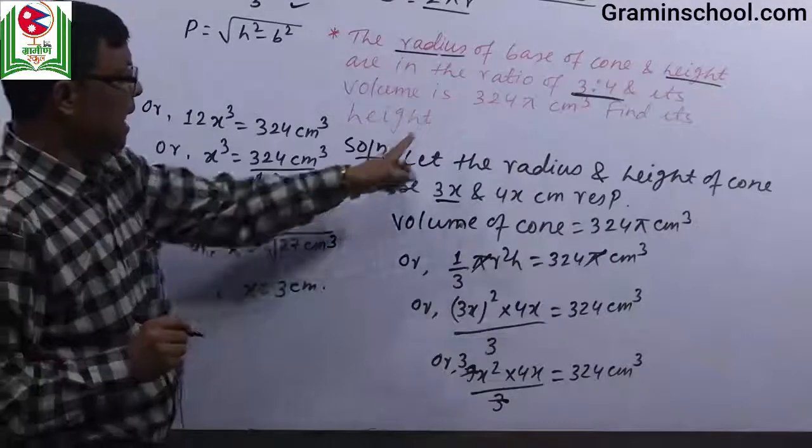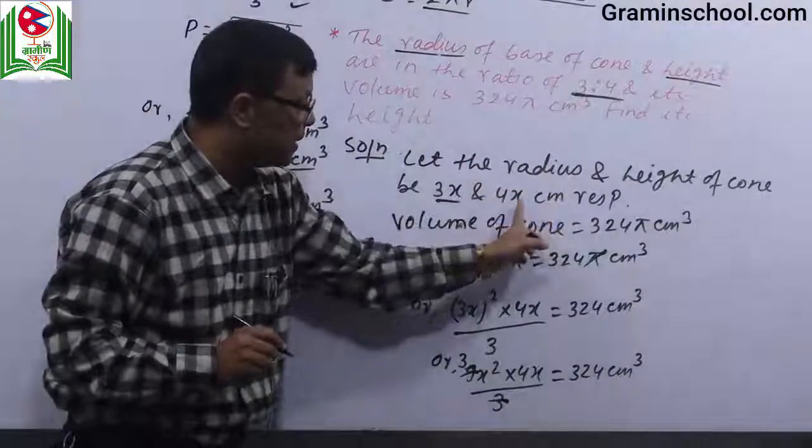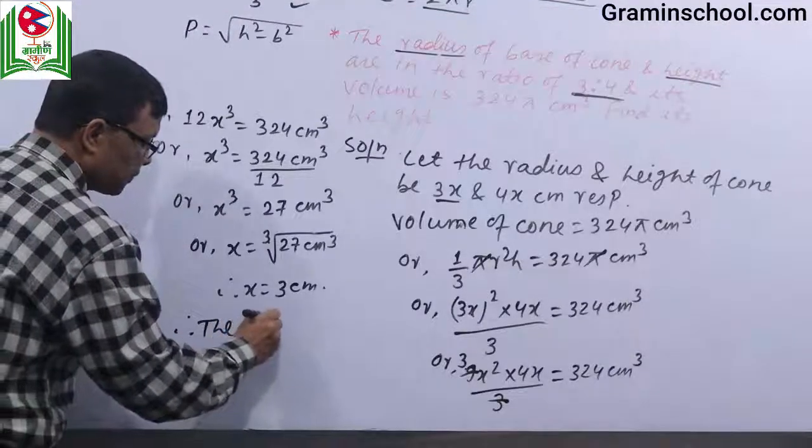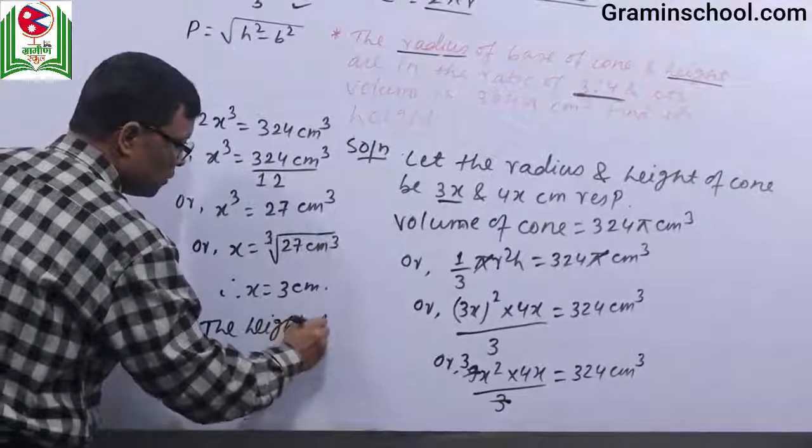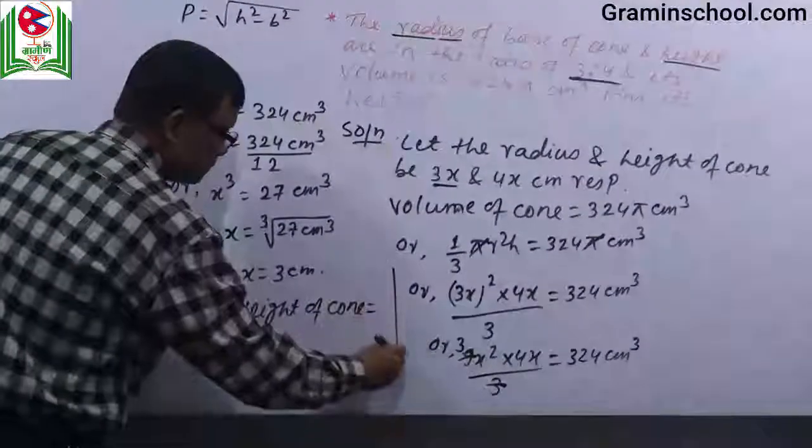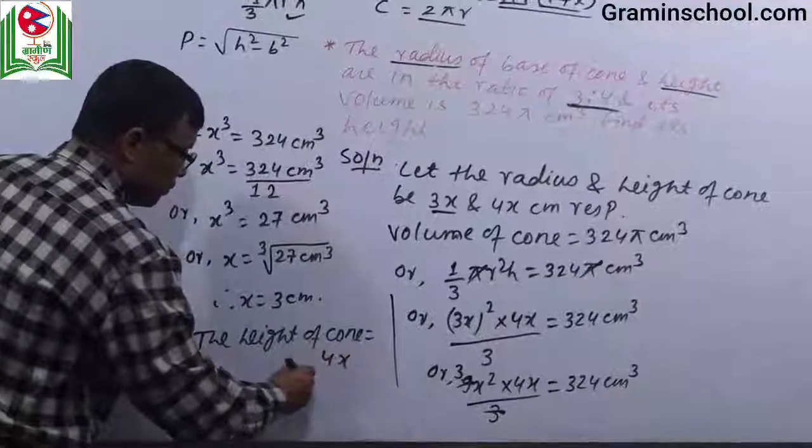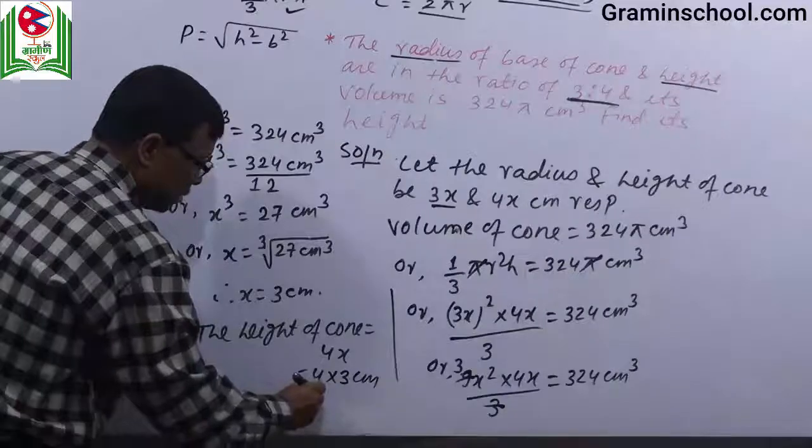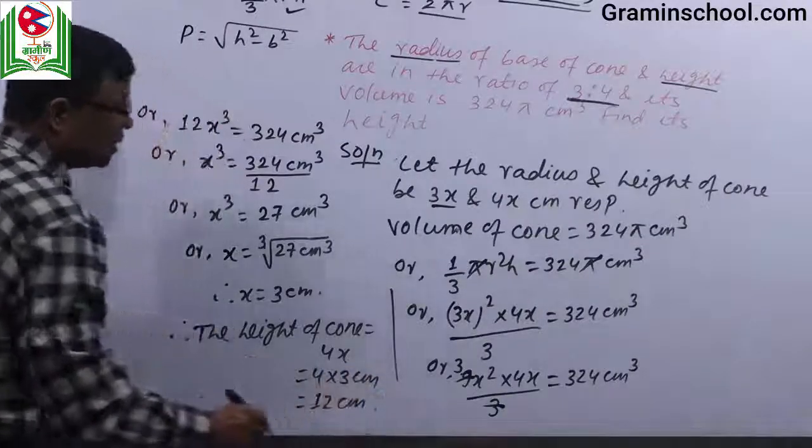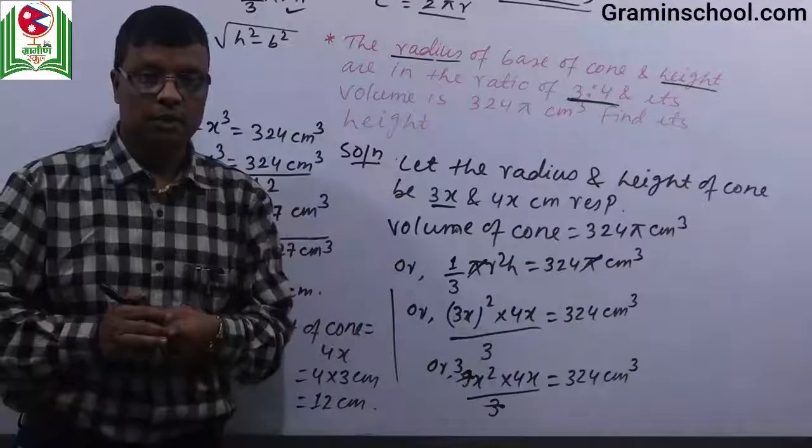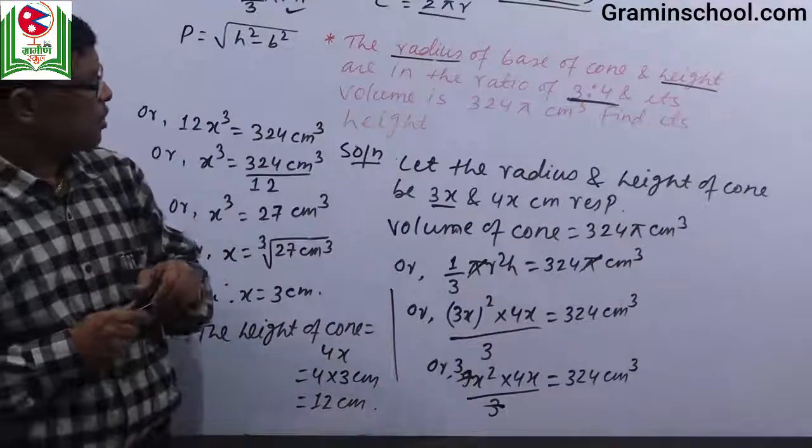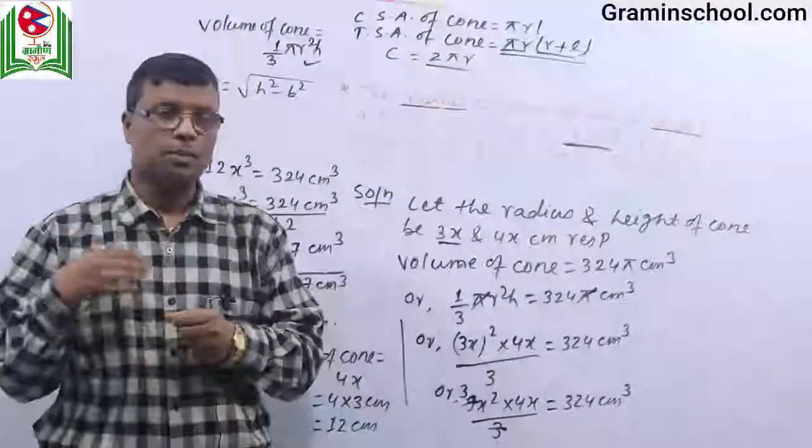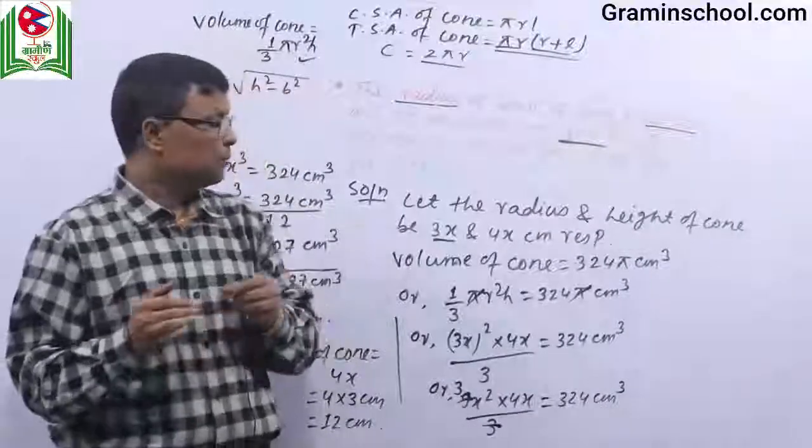But the height of cone is equal to 4x. So height equals 4 times 3, which is 12 centimeters. This is the height of cone. Thank you.